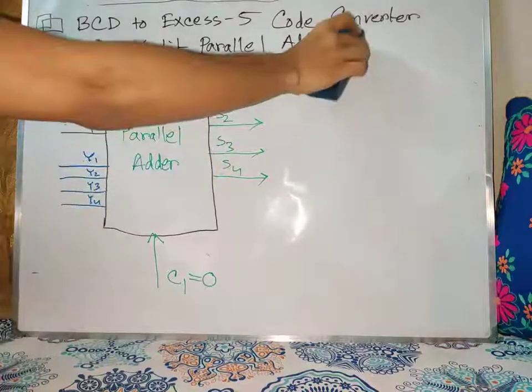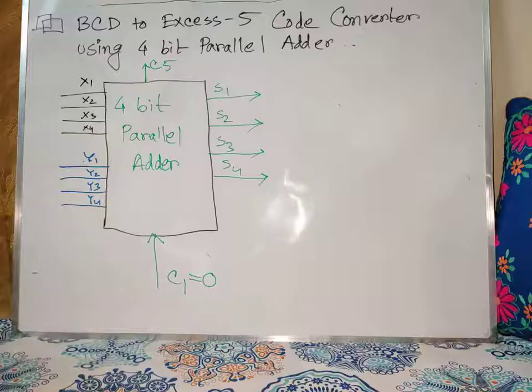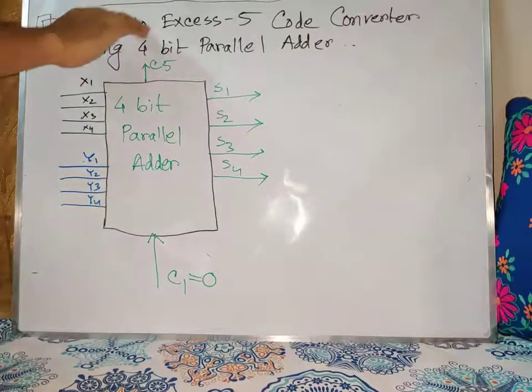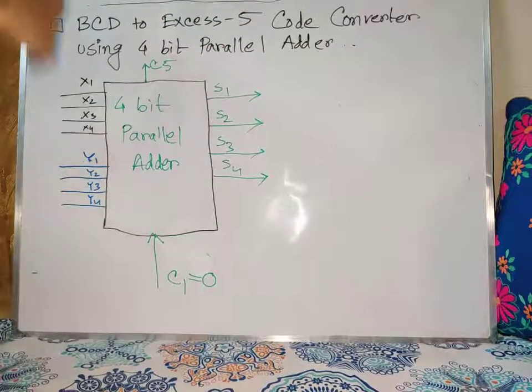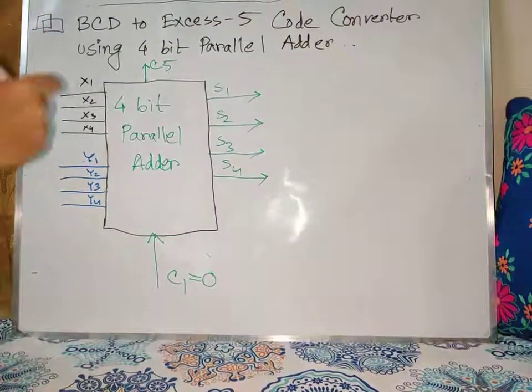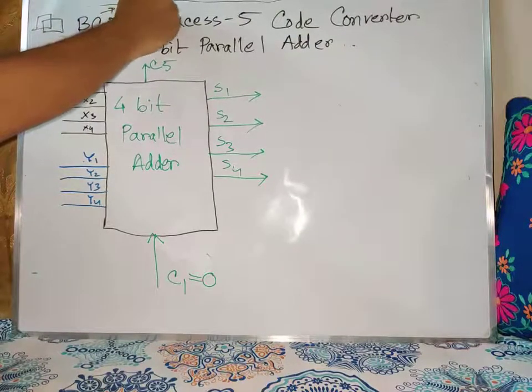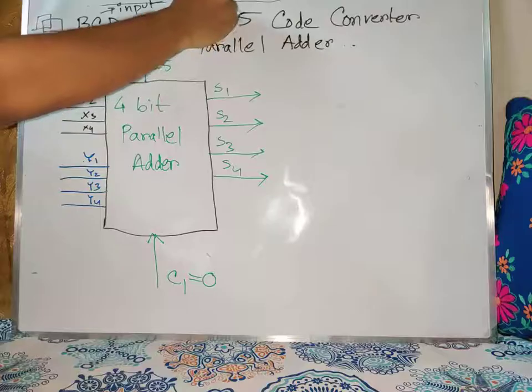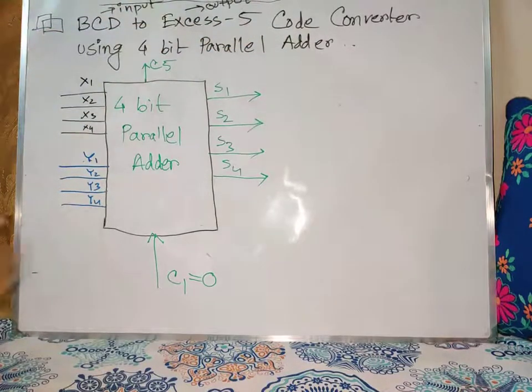Using a 4-bit parallel adder, we are designing a BCD to XS5 code converter. That means the input is BCD and the output is XS5. This is confirmed. This is what we have to use.